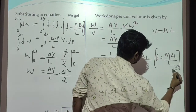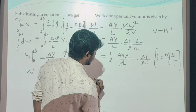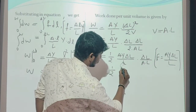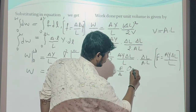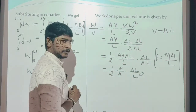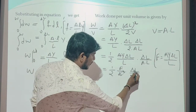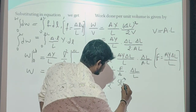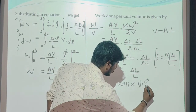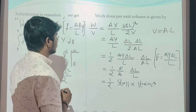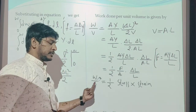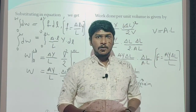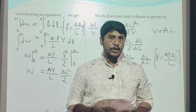We know that force F = A·Y·delta L / L, so F/A = Y·delta L / L. Rearranging: W/V = (1/2) · (F/A) · (delta L / L). Here F/A is nothing but stress, and delta L / L is longitudinal strain. So this equation becomes: work done per unit volume = (1/2) × stress × strain. This is the expression for work done per unit volume for stretching a wire. Thank you.